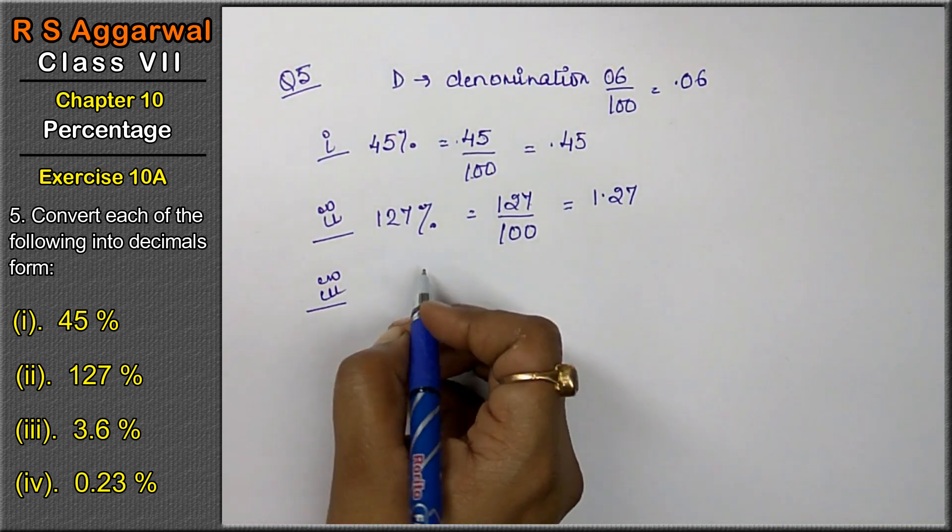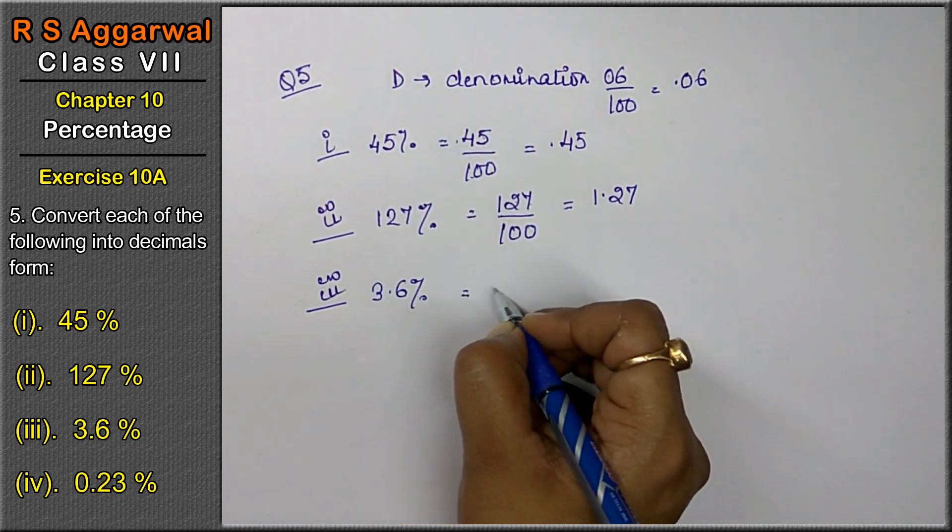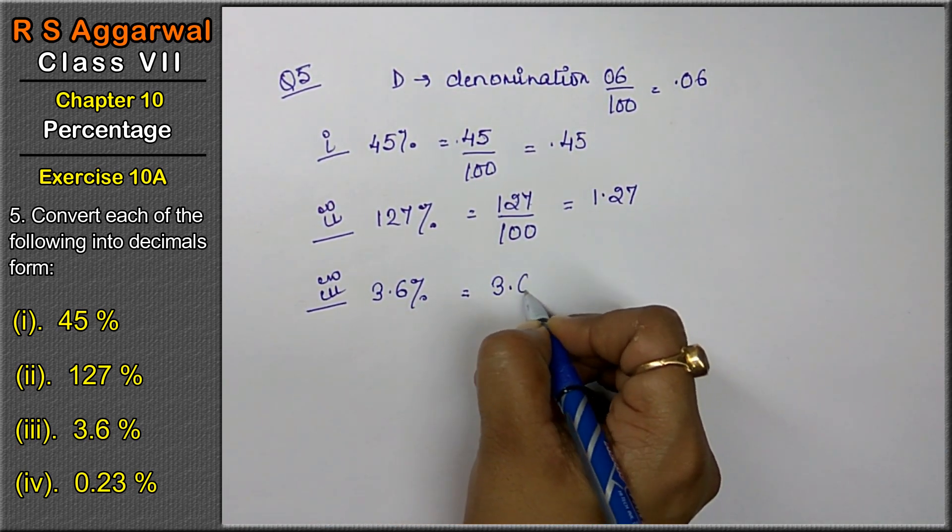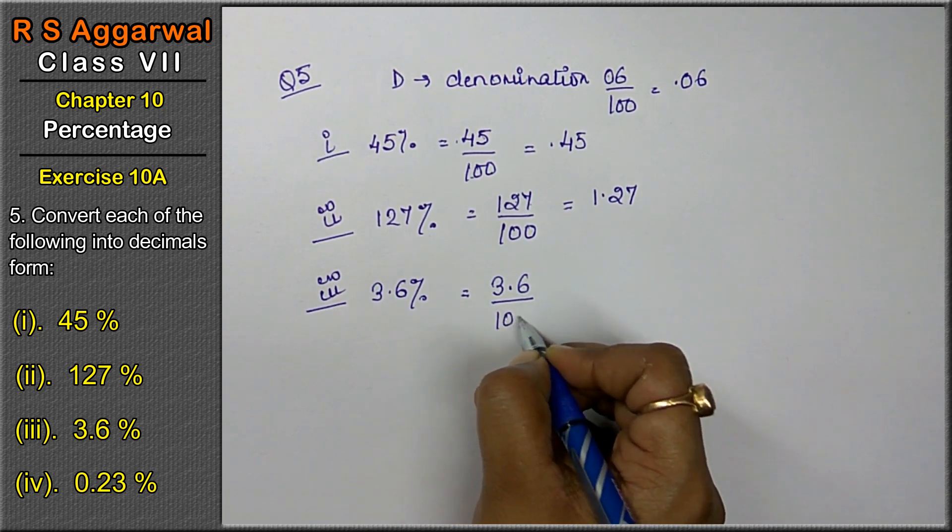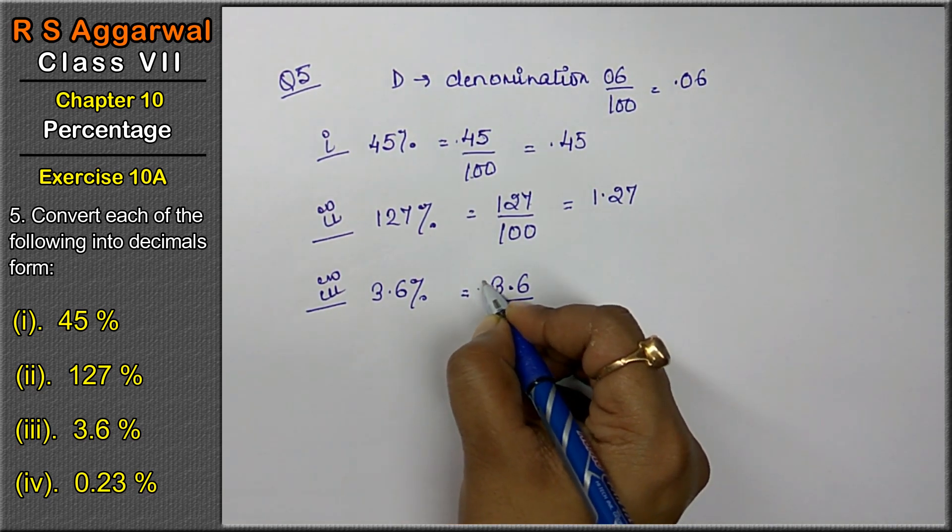Let's do third part. Third part is 3.6%. Friends, 3.6% means 3.6 upon 100. Now 2 zeros are there, so here the point is already there.